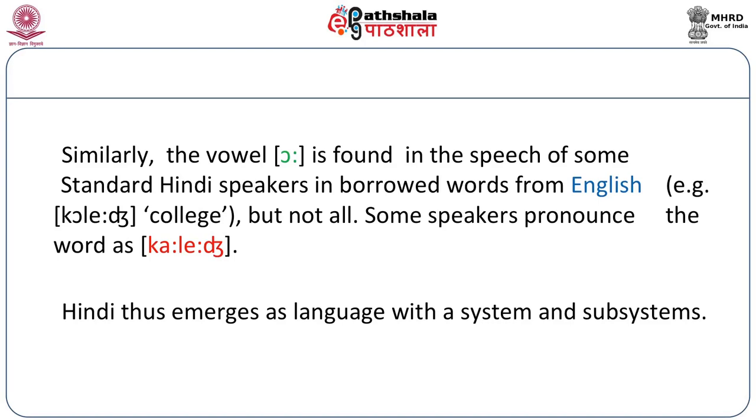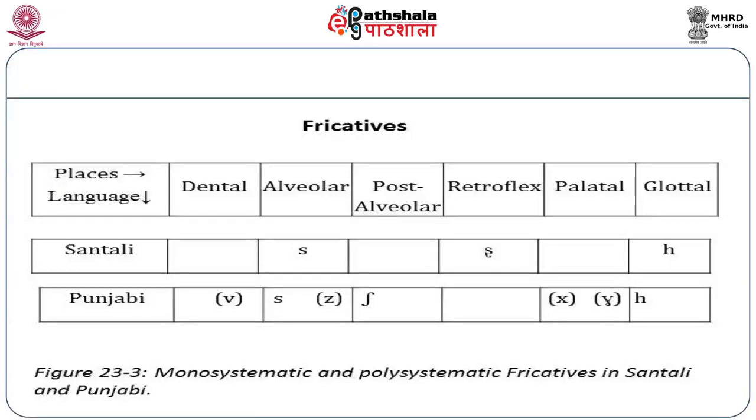We have examples of phonemic systems which are very clearly monosystematic, but we also have examples of systems which are polysystematic. We just have consonant systems in a language such as Punjabi which seems to have multiple systems within it—there are marginal consonants and non-marginal consonants. Similarly with vowels.